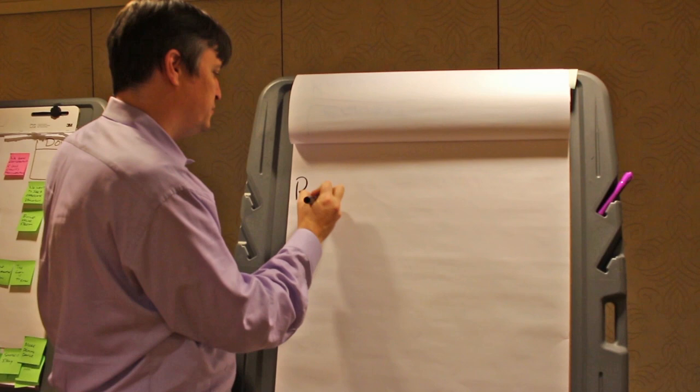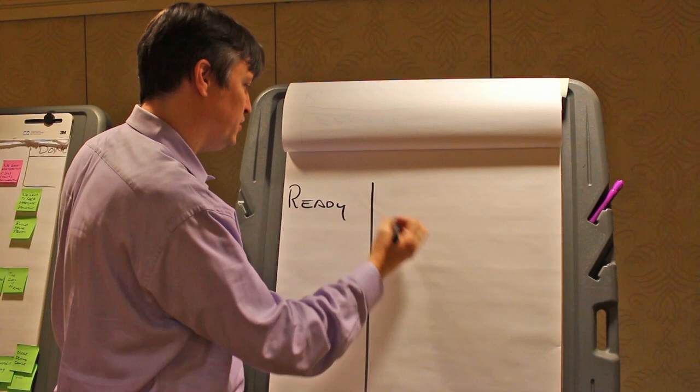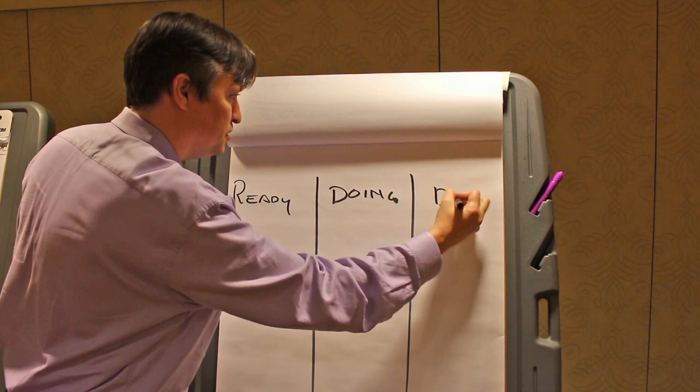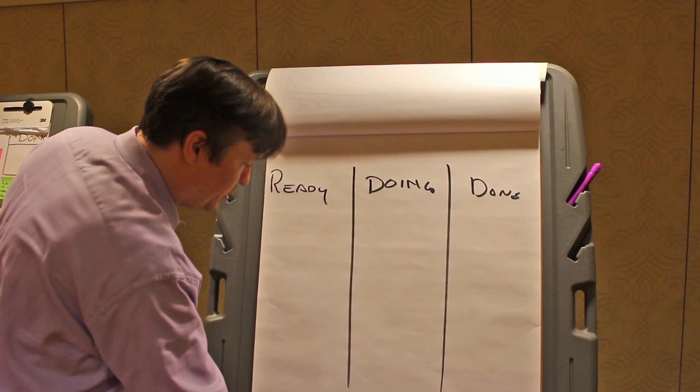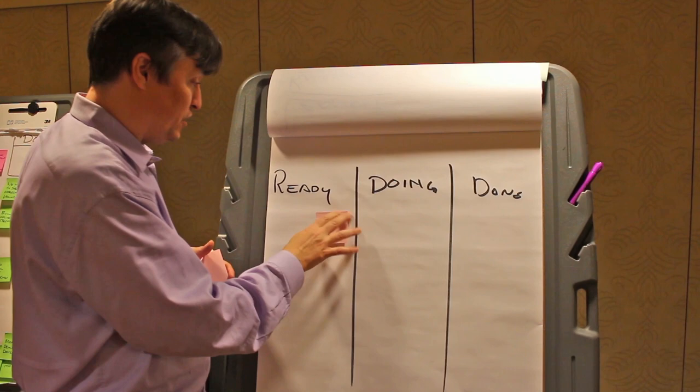The basic Personal Kanban allows us to set up a quick personal or small team value stream — ready, doing, done — which is the simplest value stream we can have. What happens first is we take all of that work out of our heads and put it directly into a backlog.